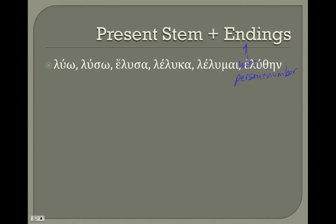We could take, for example, the verb 'luo' — to break, to loosen, to untie. For the present tense, we're going to use the first principal part and get the present stem from that. The present stem is everything except the omega. The omega is the first person ending. So 'luo' actually means 'I am freeing' or 'I am untying'.